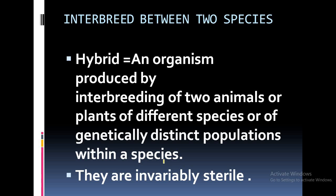What happens if interbreeding is done between two different species? The product is known as a hybrid. You must know the difference between fertile — which can reproduce — and sterile — which cannot reproduce. A hybrid is an organism that is the product of interbreeding between individuals of two different species, and hybrids are invariably sterile.